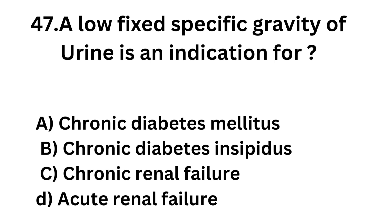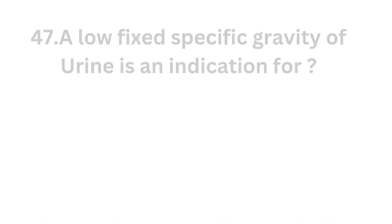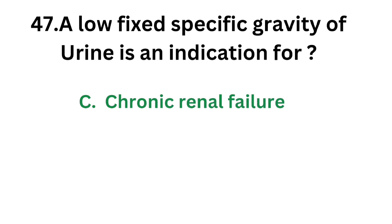Question number 47. A low fixed specific gravity of urine is an indication for: Option A - Chronic diabetes mellitus; Option B - Chronic diabetes insipidus; Option C - Chronic renal failure; Option D - Acute renal failure. The correct answer is Option C, Chronic renal failure. A low fixed specific gravity of urine is an indication of chronic renal failure.